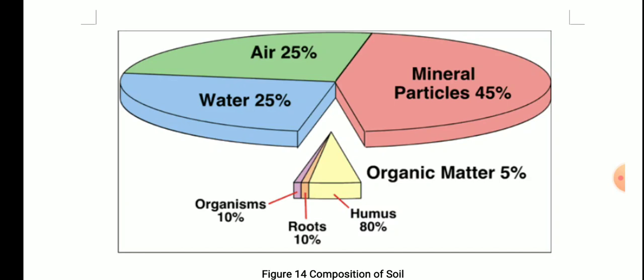Within that 5 percent organic matter: humus makes up 80 percent, organisms account for 10 percent, and roots cover the remaining 10 percent. So this is the composition of soil — out of 100 percent, these are the parts, and within the 5 percent organic matter, that is how humus, roots, and organisms are distributed.